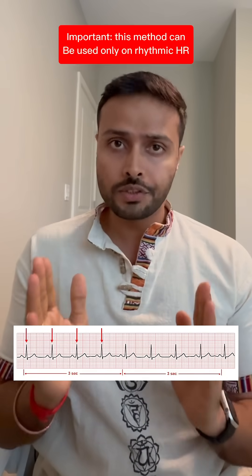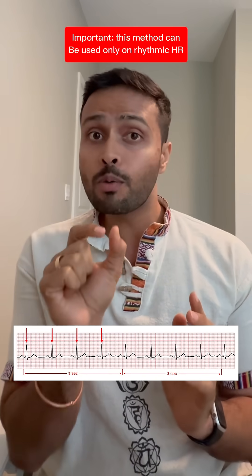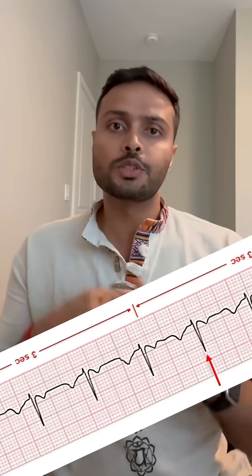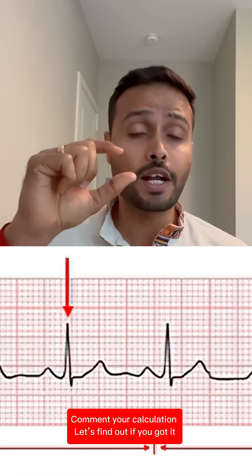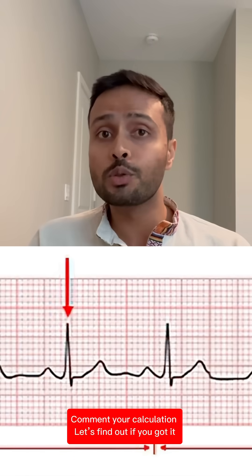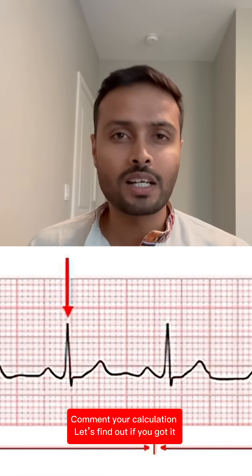For the first trick, you will need a calculator. Find two R waves in the ECG strip and calculate how many small boxes are between them. As you can see in this example, count how many small boxes are there, then divide 1500 by that number of small boxes — the result will be your heart rate.